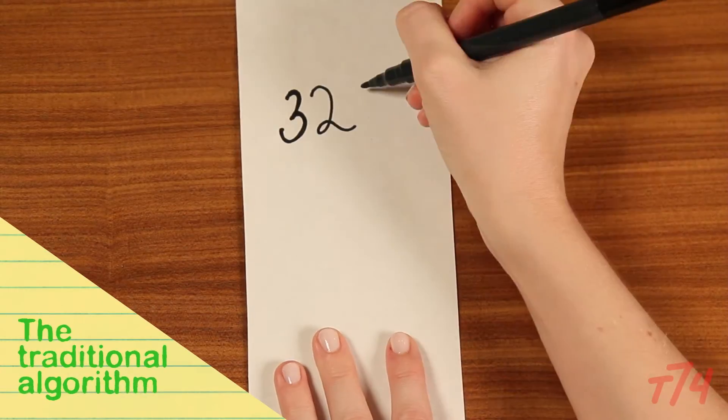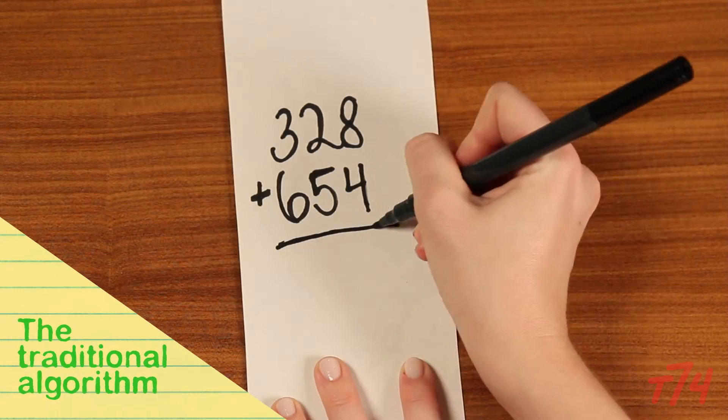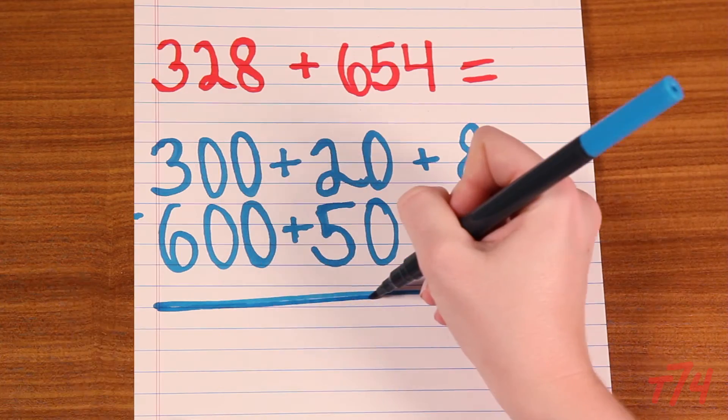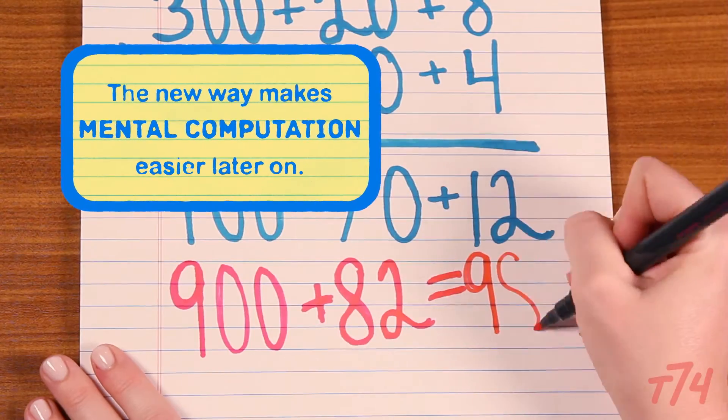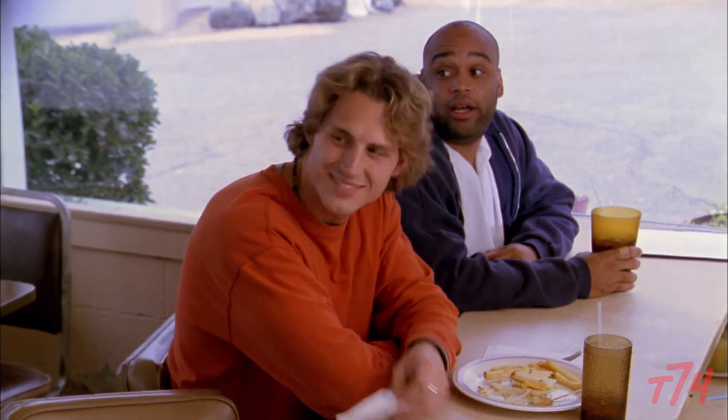Of course kids still learn the traditional algorithm, but learning to break numbers down first gives them a better understanding of place value and makes mental computation easier later on. And that's how everyone is still friends at the end of the night.